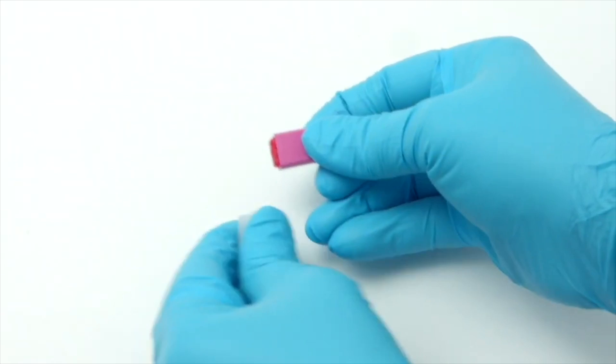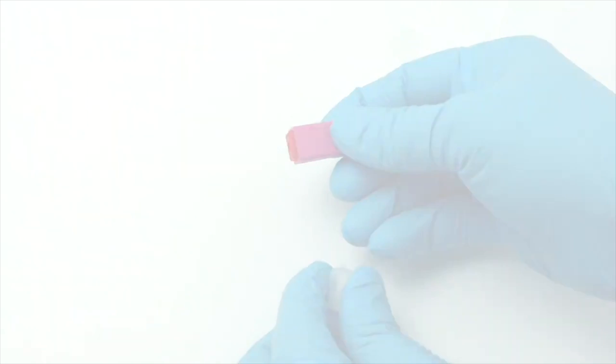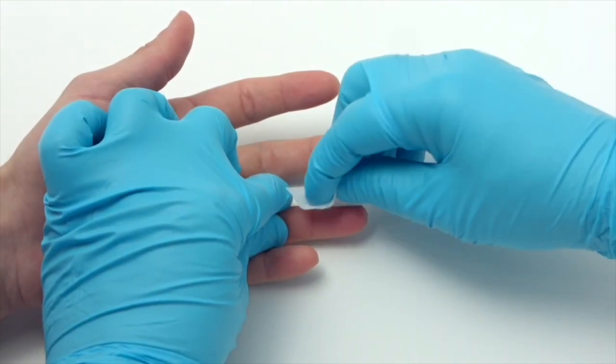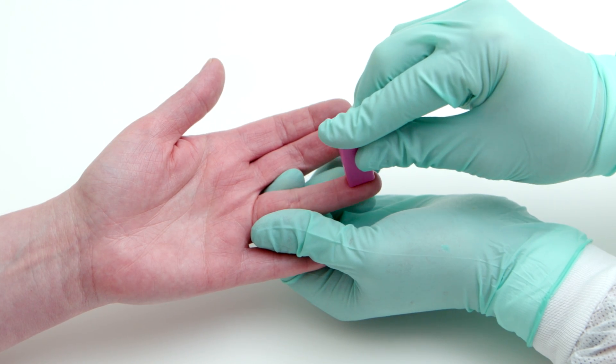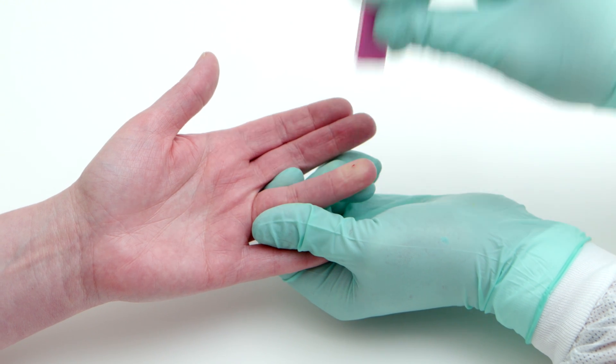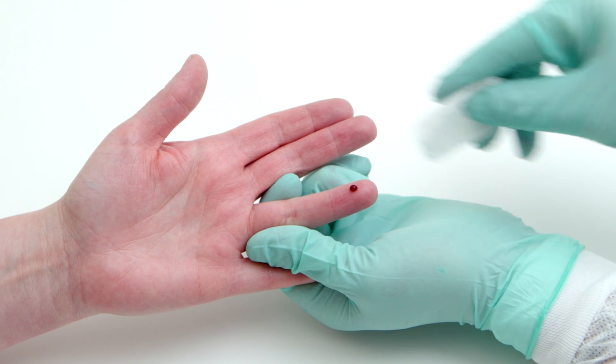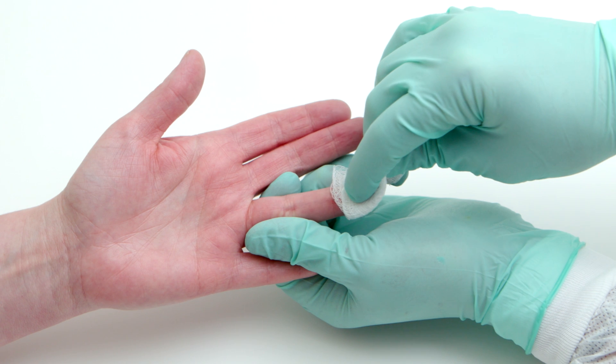Safety lancet. Prepare to collect the finger stick sample by cleaning the patient's finger with an alcohol wipe. Once the finger is dry, puncture with a sterile lancet. Be sure to wipe away the first drop of blood with sterile gauze and avoid squeezing the finger.